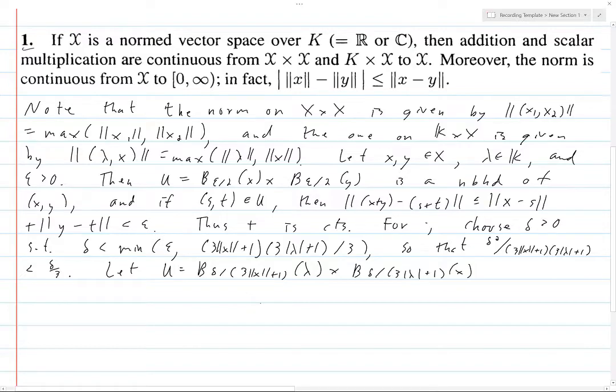And this plus 1 is just to be safe, because we're not ruling out the scenario in which norm of x or norm of lambda are 0.